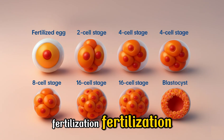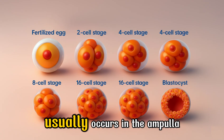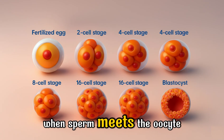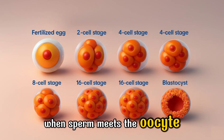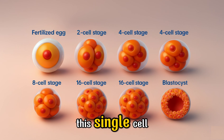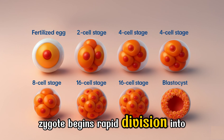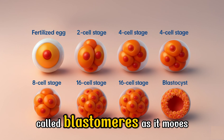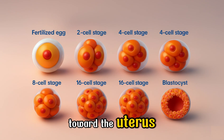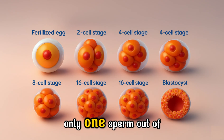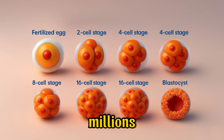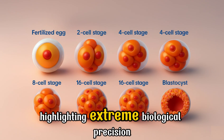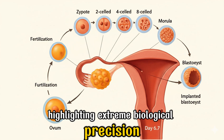Fertilization usually occurs in the ampulla of the fallopian tube when sperm meets the oocyte. This single-cell zygote begins rapid division into small cells called blastomeres as it moves toward the uterus. Only one sperm out of millions successfully fertilizes the egg, highlighting extreme biological precision.